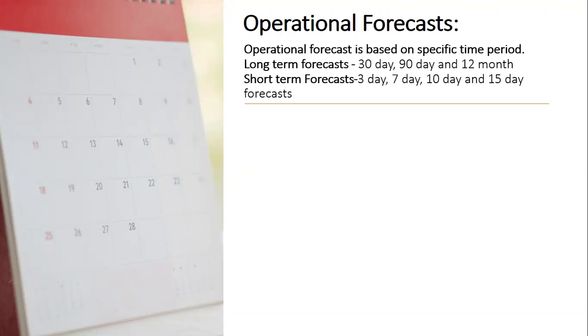Long-term forecasts are mainly of three types: 30-day, 90-day, and 12-month.